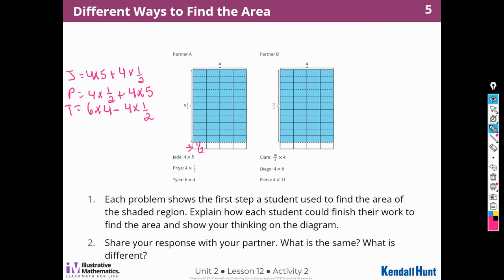And partner B has Claire. Claire started with 10 over 2 times 4. So 10 halves times 4. So I see 1, 2, 3, 4, 5, 6, 7, 8, 9, 10. So 10 halves times 4 would be this thing here. But then I'm going to have to add in, what? 1 half times 4. So 1 half times 4. Because each one of these is 1 half. And then I would get the answer.